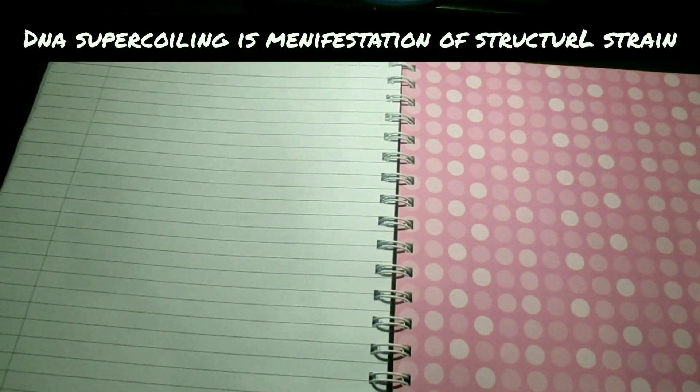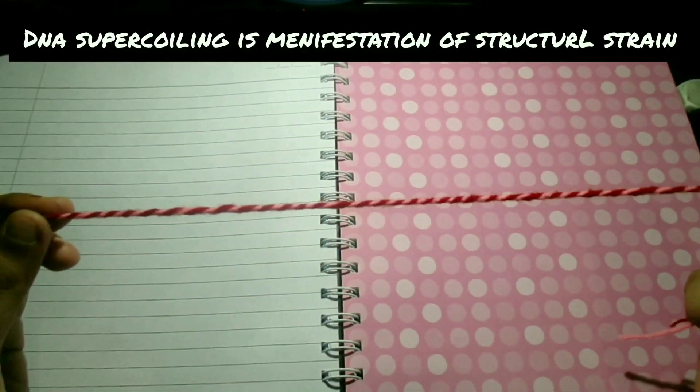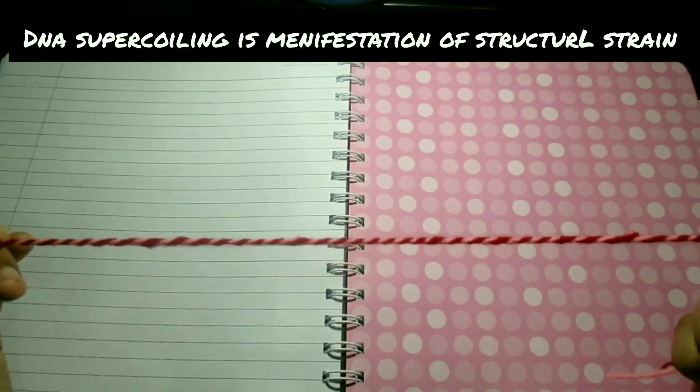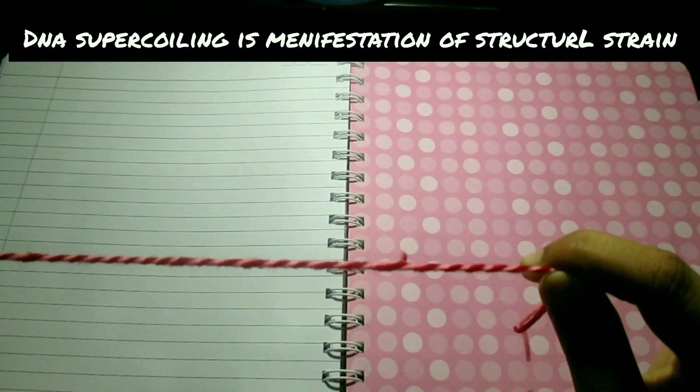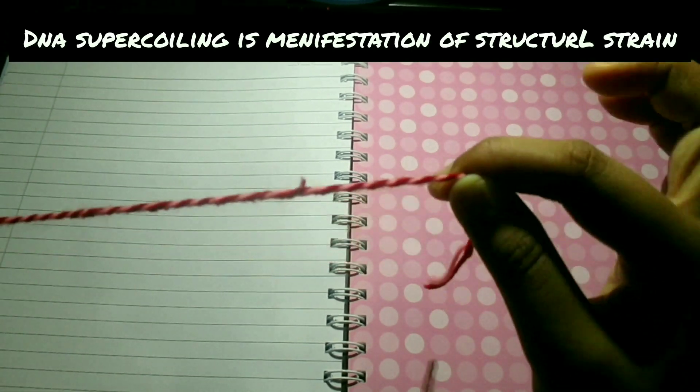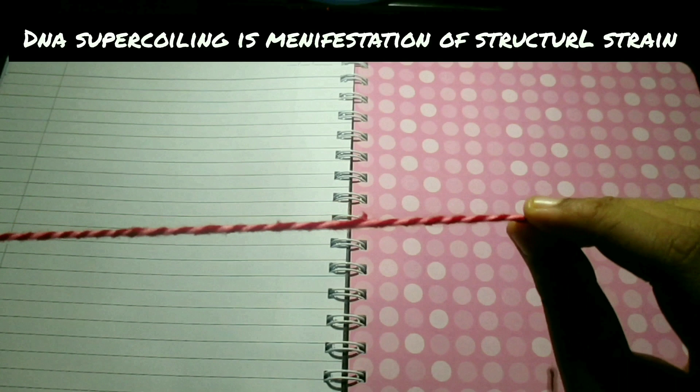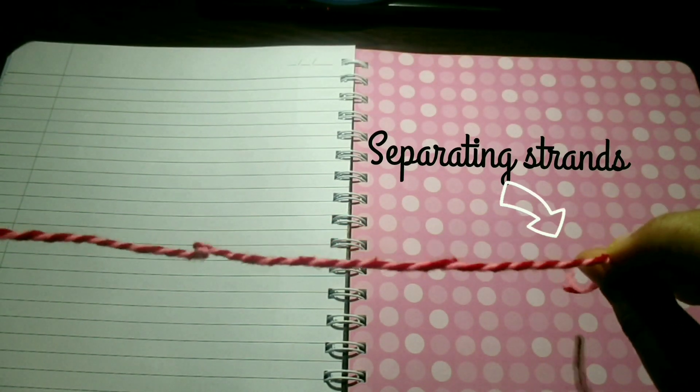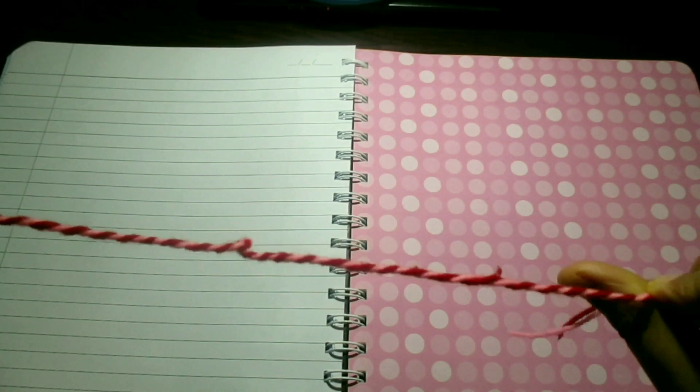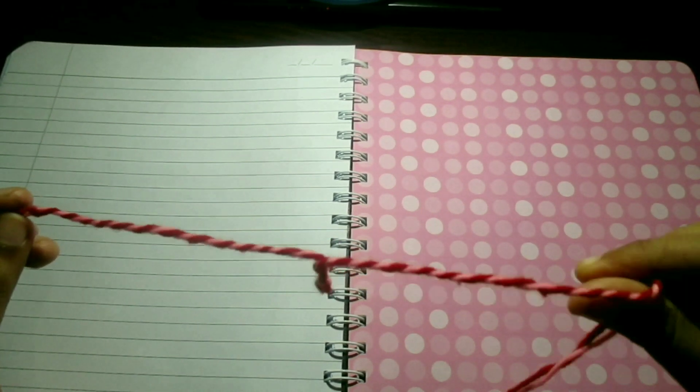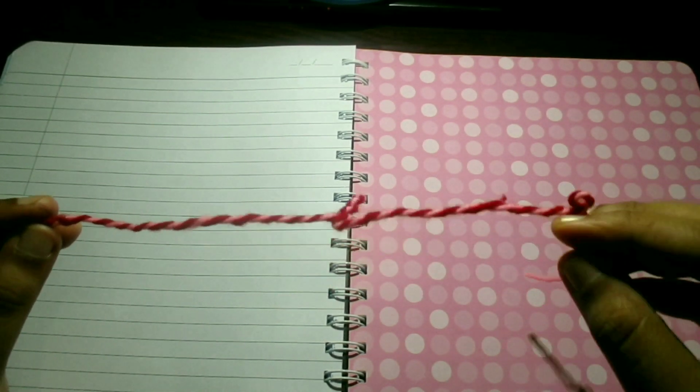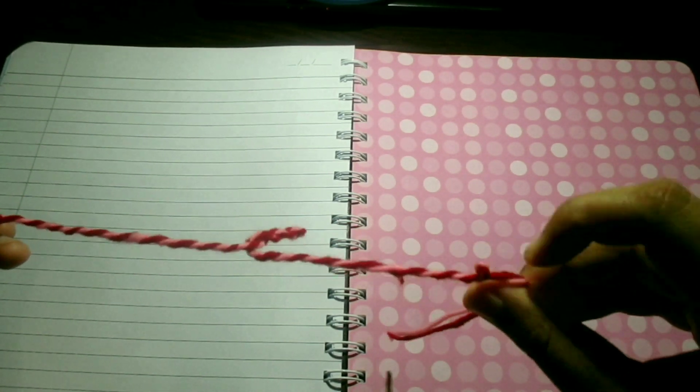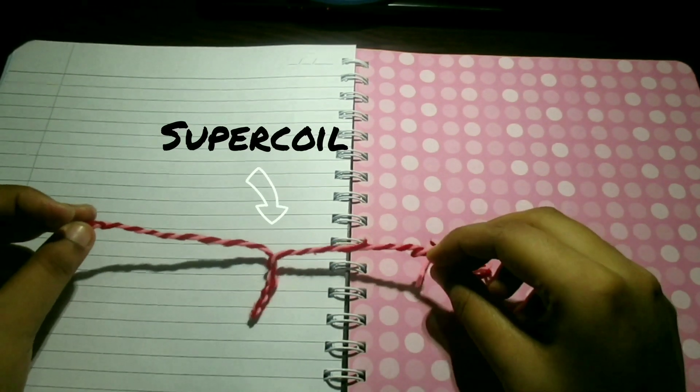DNA supercoiling is manifestation of structural strain. Suppose these different colored threads are representing double-stranded DNA. The general effect can be illustrated by twisting two strands of this thread about each other to form a double helix.